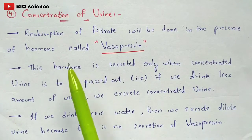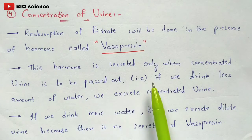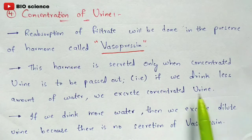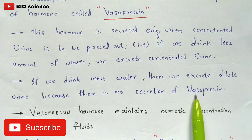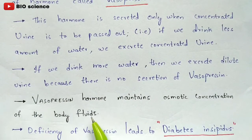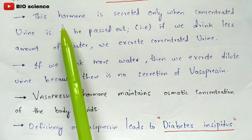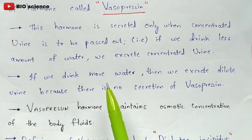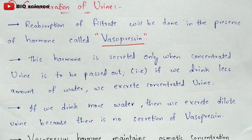Stage 4 — Concentration of urine: absorption of filtrate is done in the presence of vasopressin hormone, secreted only when concentrated urine is to be passed out. Drinking less water leads to concentrated yellow urine; drinking more water leads to dilute white urine with no vasopressin secretion. Vasopressin maintains osmotic concentration of body fluids, and its deficiency leads to diabetes insipidus. Thank you for watching — please like, share, subscribe, and comment any doubts.